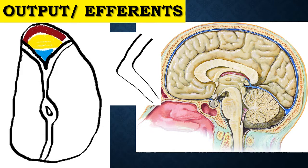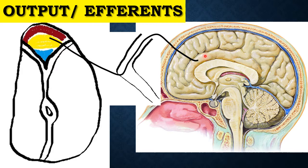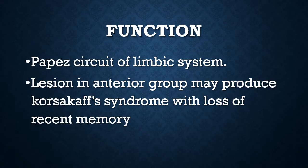Coming to the efferent fibers: the anterior medial passes through the anterior limb of the internal capsule and connects with the cingulate gyrus. The function of the anterior nucleus group is the Papez circuit of the limbic system. A lesion in the anterior group may produce Korsakoff syndrome with loss of recent memory.